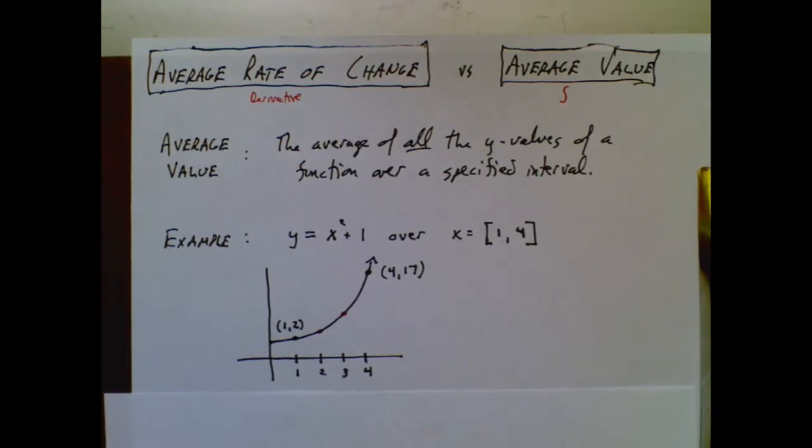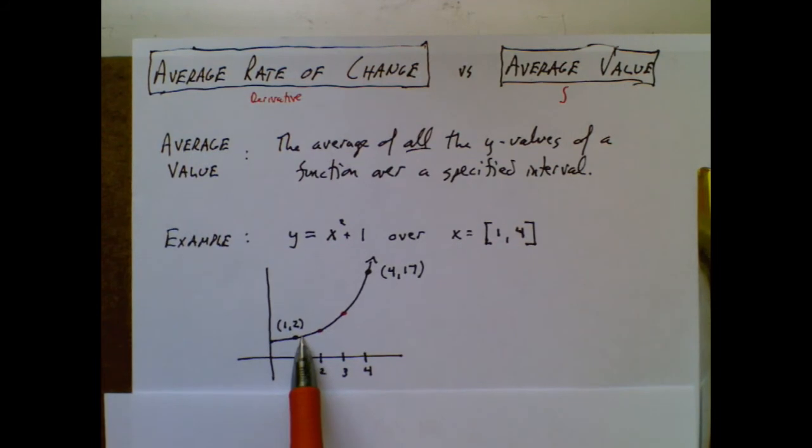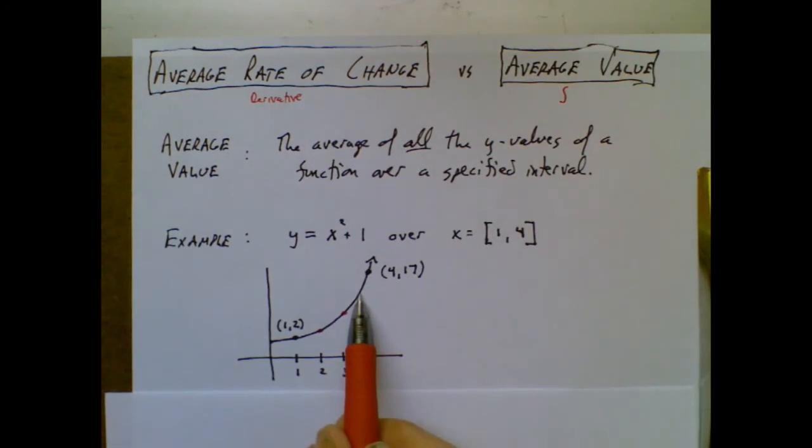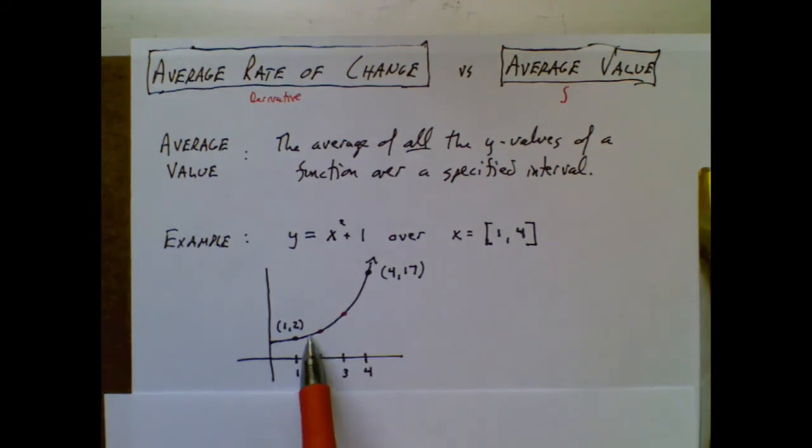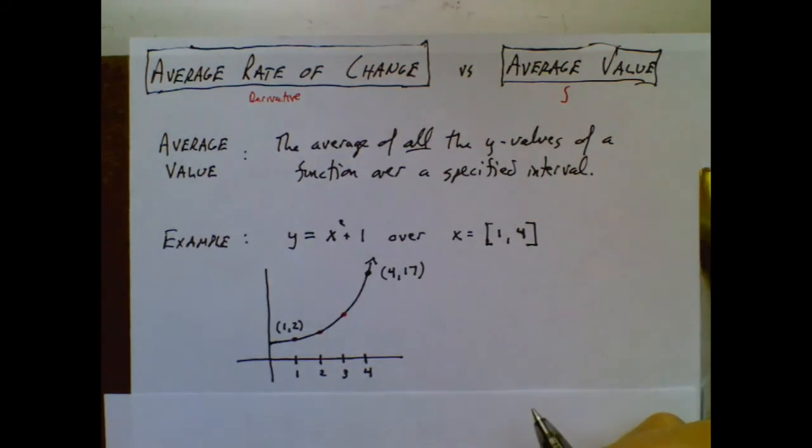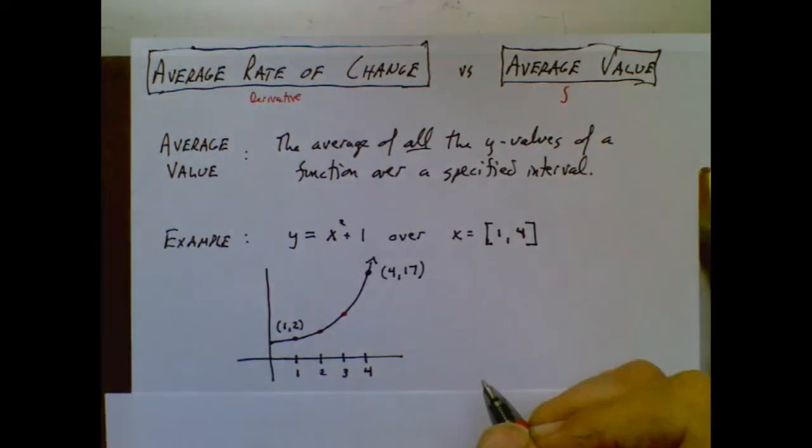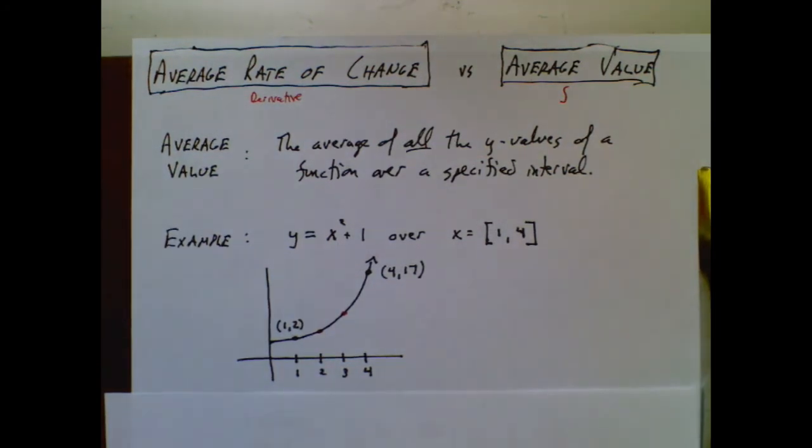But here's the problem. Those are just the y-values with integers. But there's really a y-value at 1.5, a y-value at 1.1, a y-value at 1.01. There's a y-value at 3.563247512. So you understand the implication is we've got an infinite number of y-values. How are we going to add up an infinite number of y-values and then divide by infinity? Because that's how you take an average. You add up all the data pieces and you divide by how many you had. So that's a problem because we can't add up infinity values, much less divide by infinity.